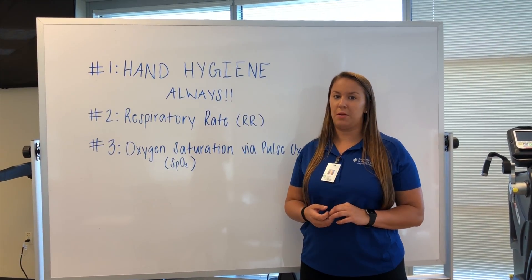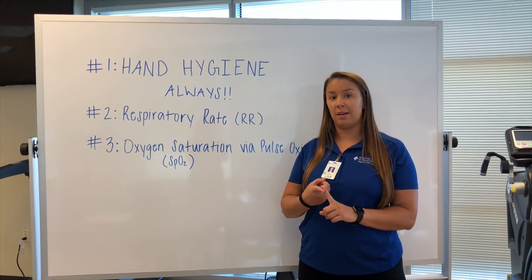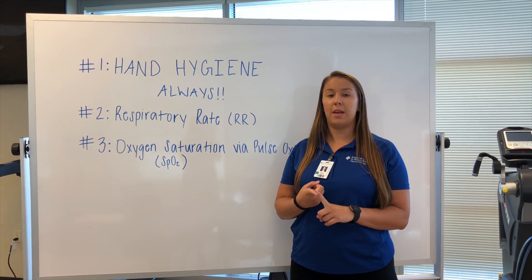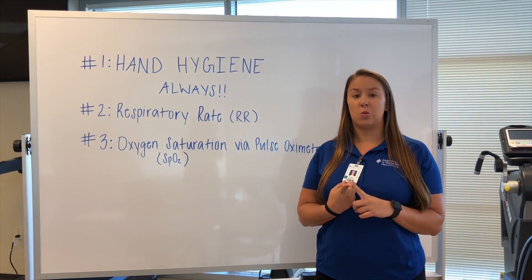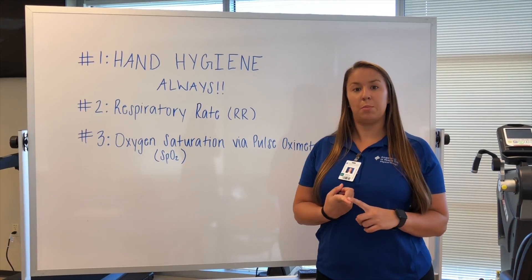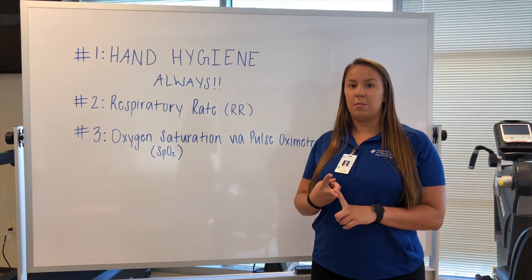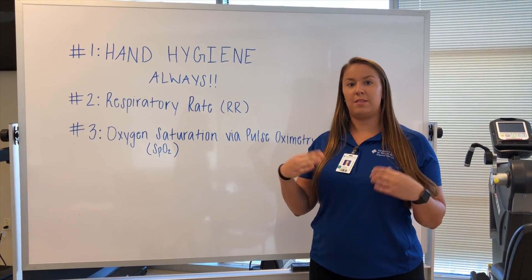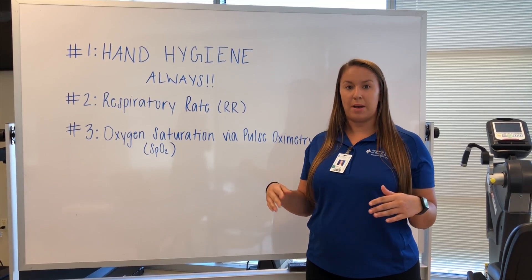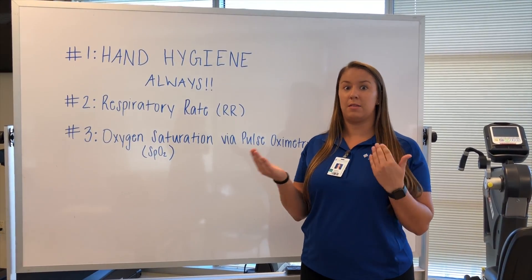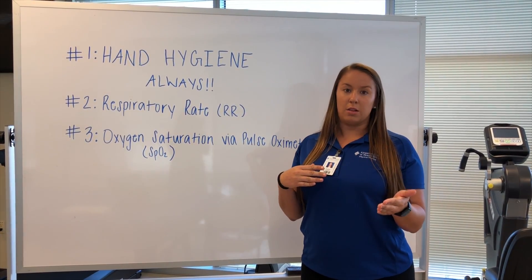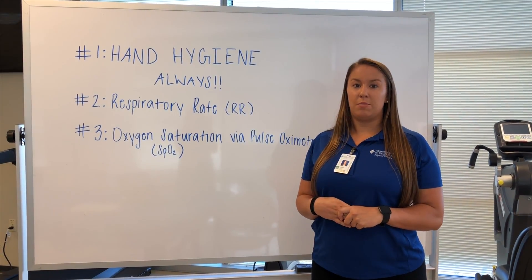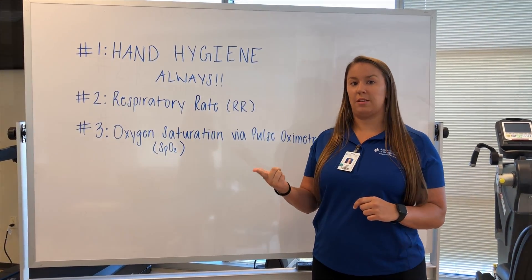When assessing respiratory rate, we look at the rate, rhythm, and depth of the breathing. The rate — a normal breathing pattern would be 12 to 20 breaths per minute. With rhythm, you assess it as regular or irregular breathing, whether it stays in a consistent pattern or varies with shallow and long breaths. The quality of breathing is either deep or shallow.